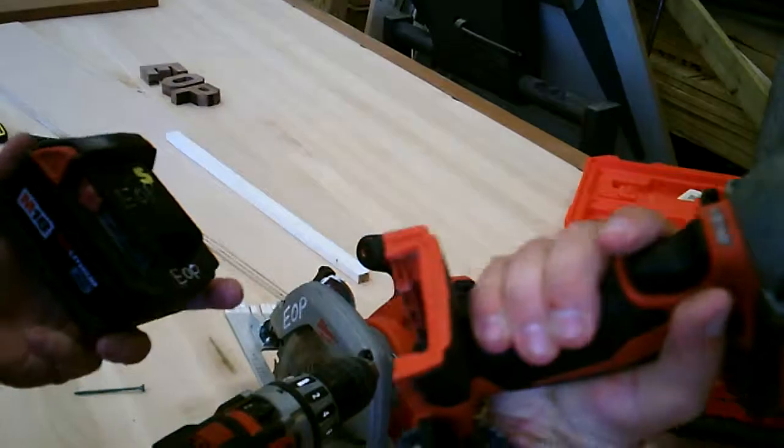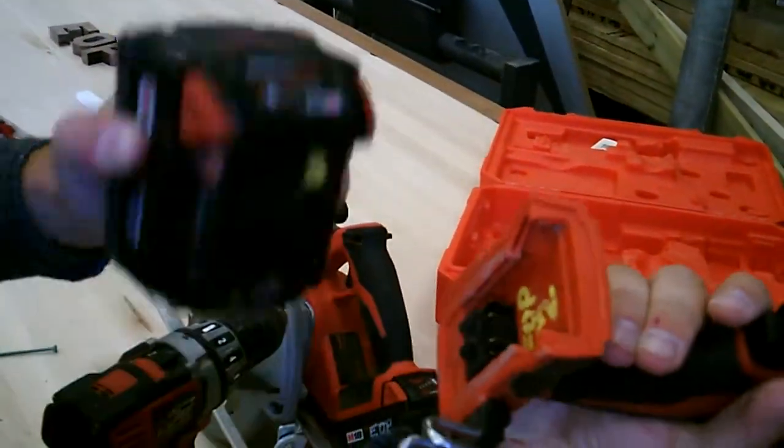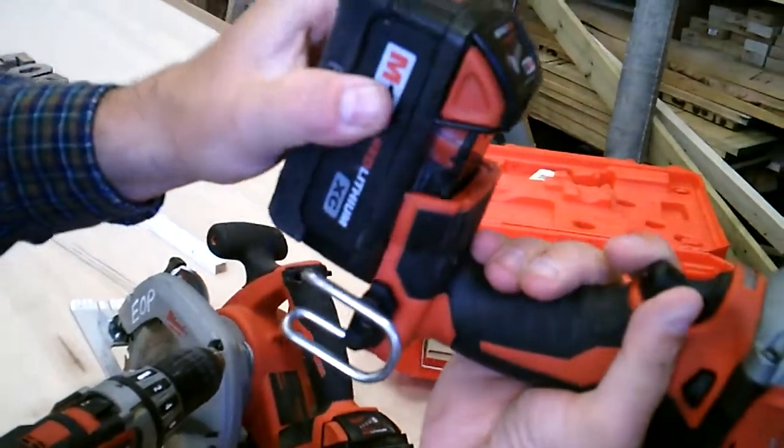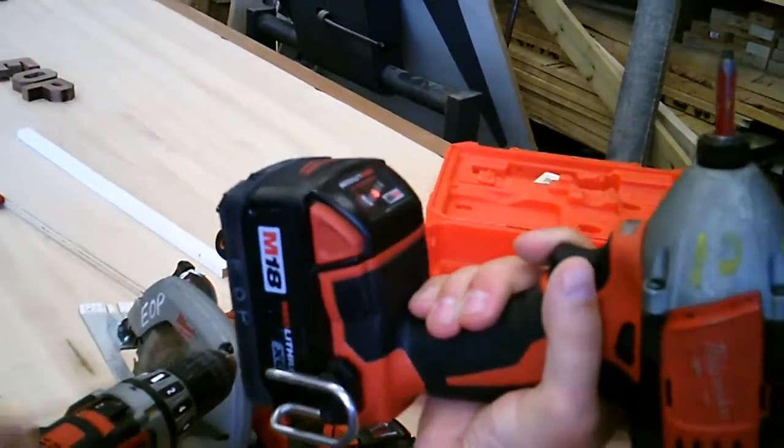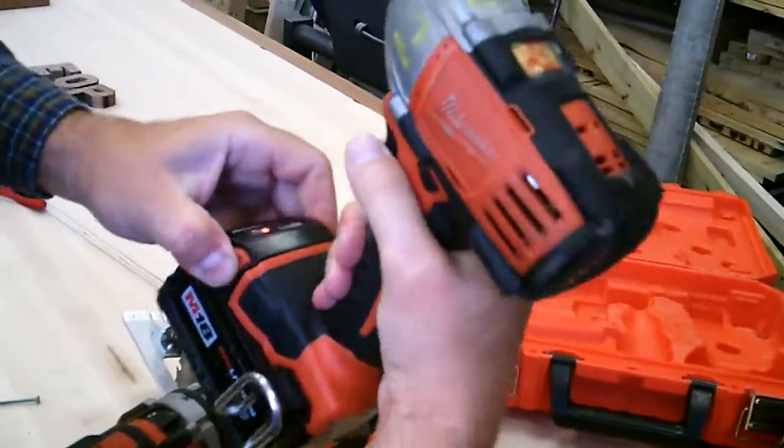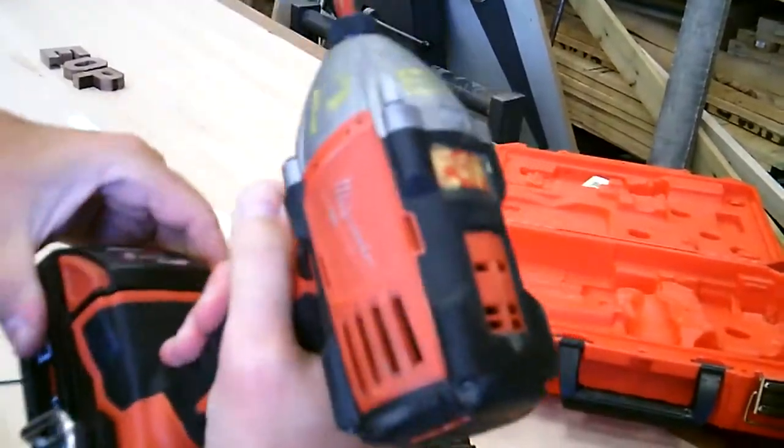Now in order to put this on, it slides in these little teeth right here. You slip it down, and it clicks in. In order to remove it, you have to push these buttons in and pull out. If you don't do that, you'll be there all day.